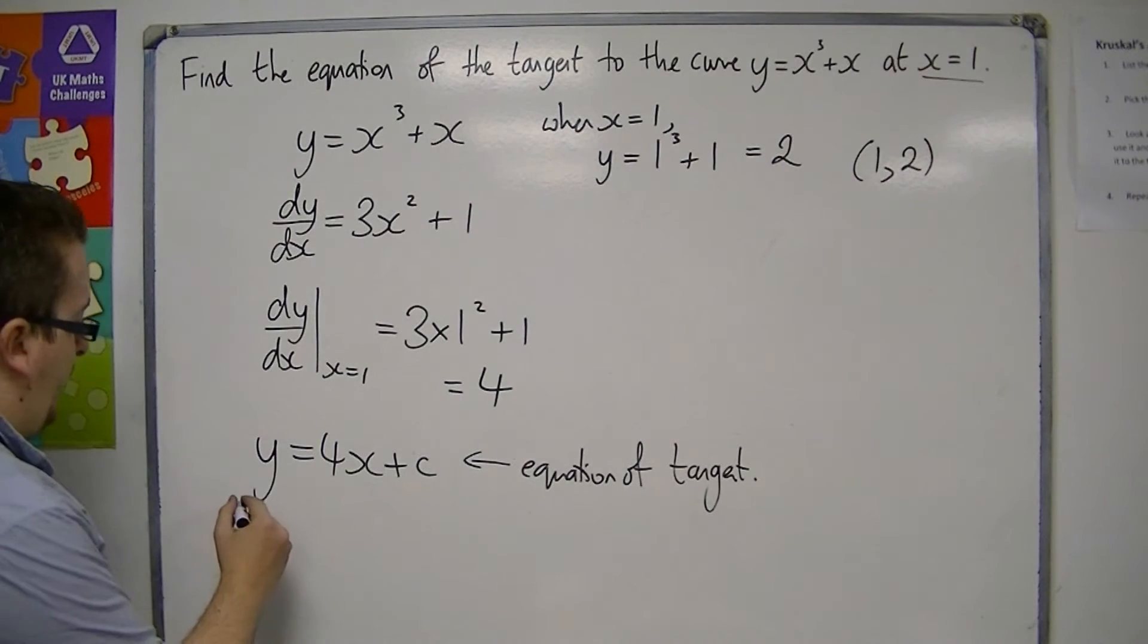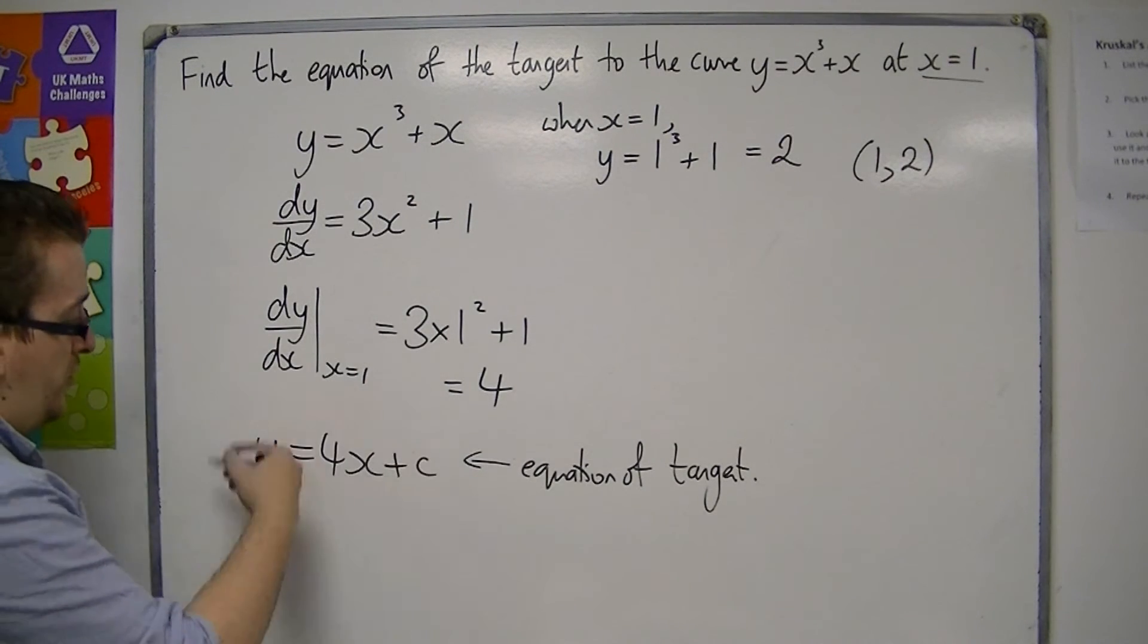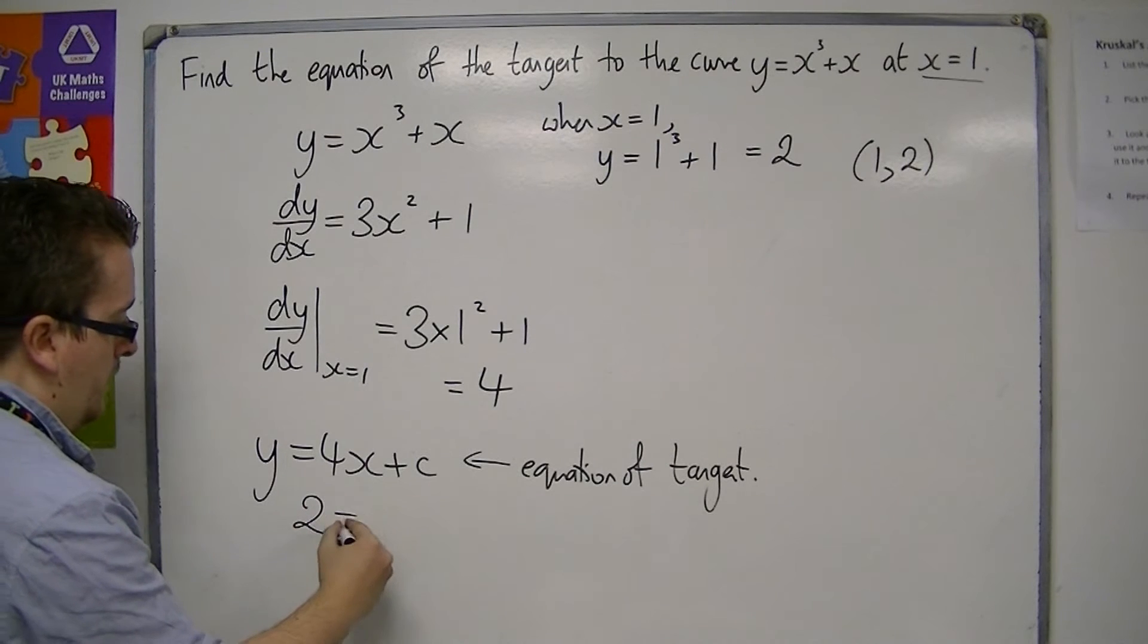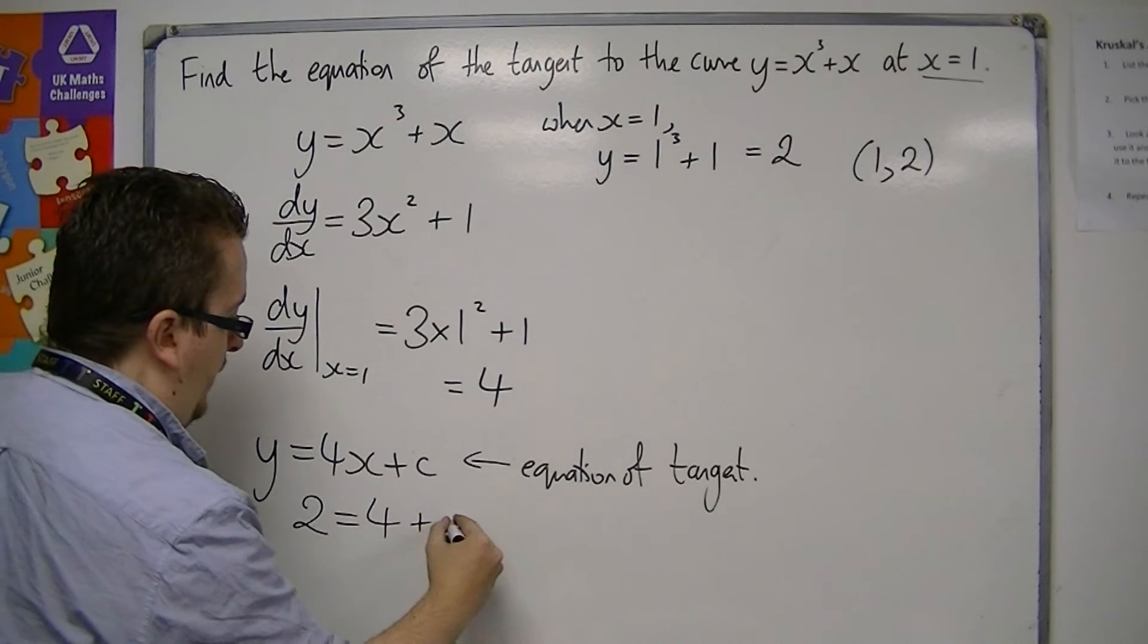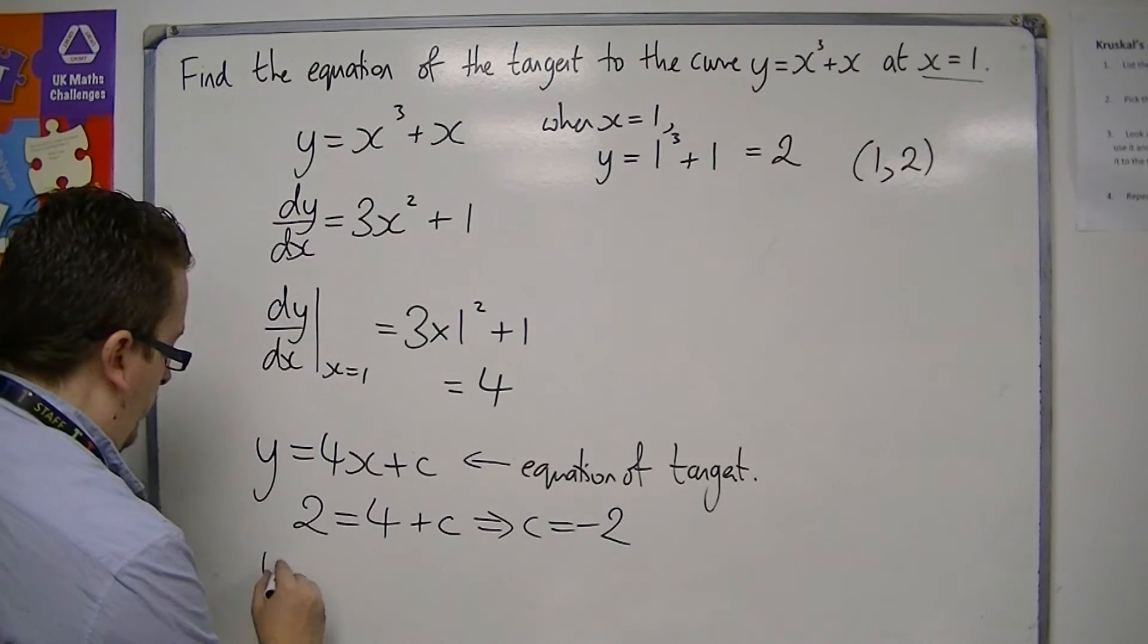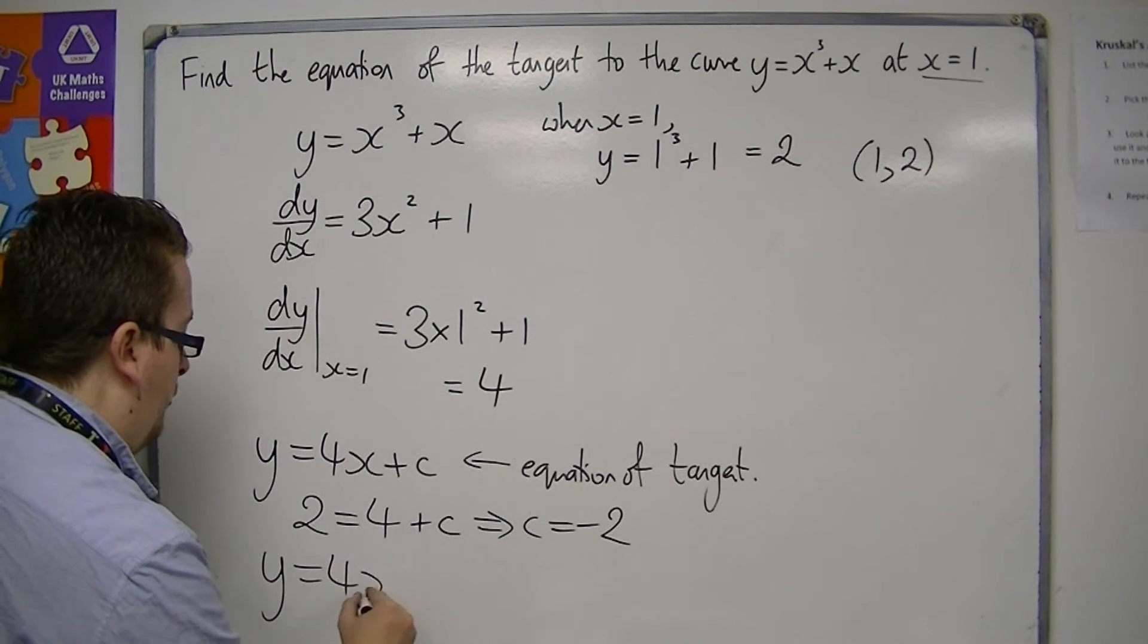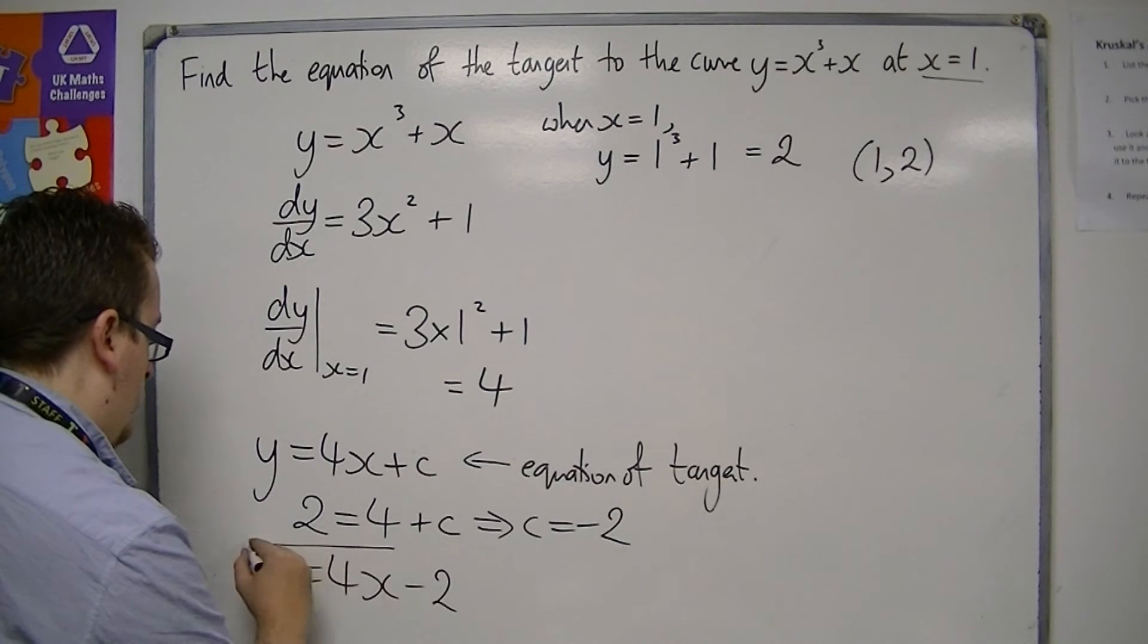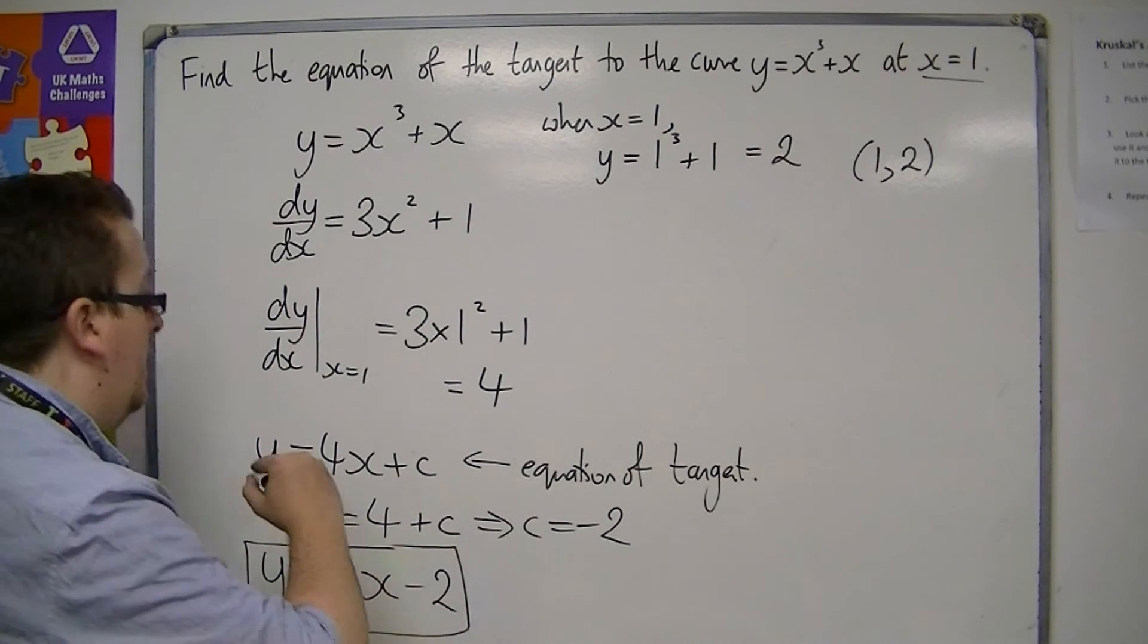So if I substitute 1, 2 into my equation of the tangent, I get 2 equals 4 plus c. So c must be minus 2. So y equals 4x minus 2 is my final answer.